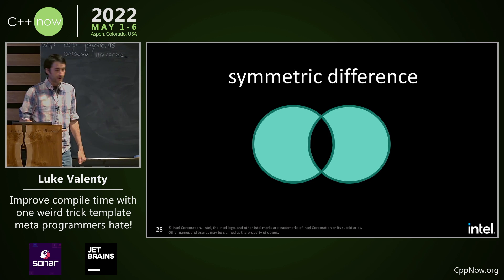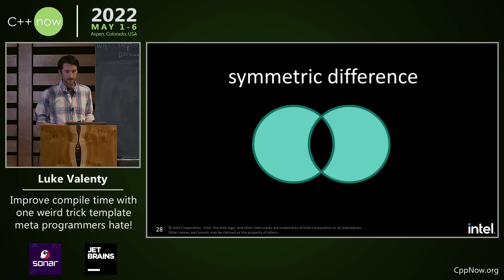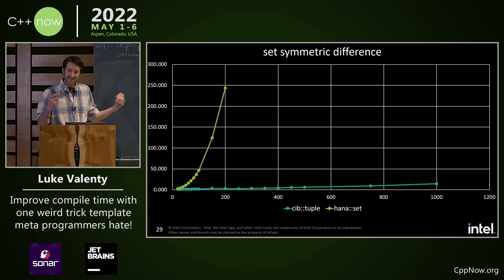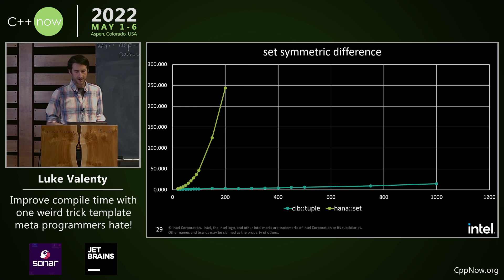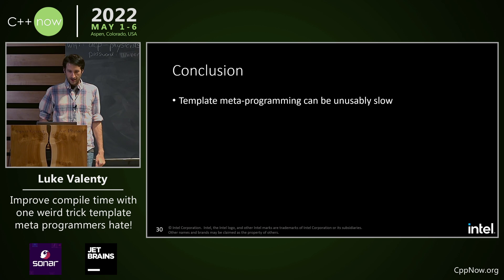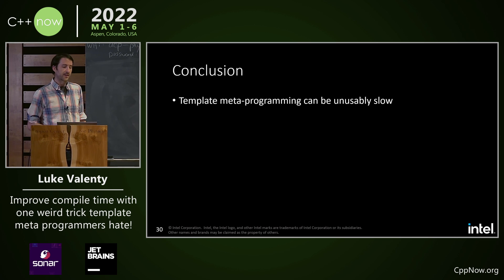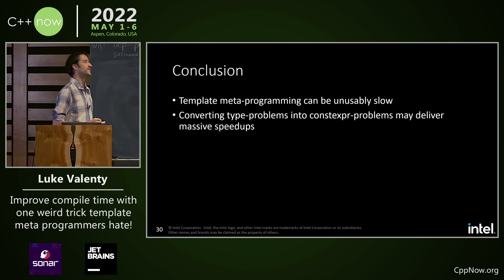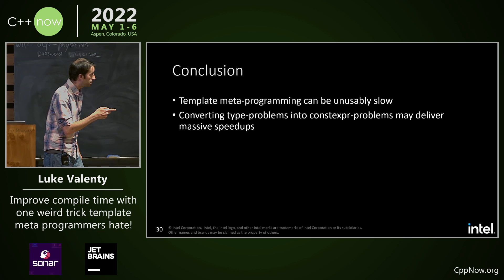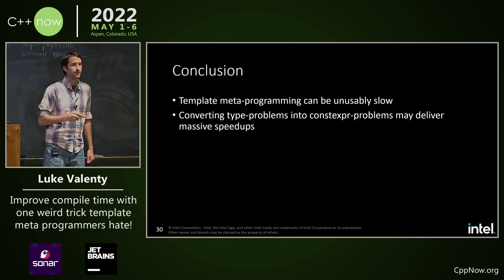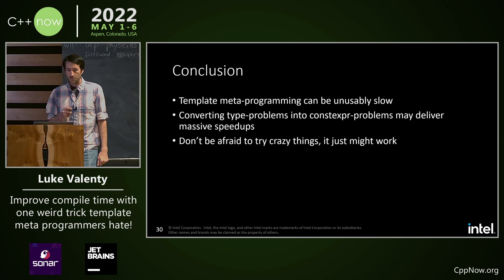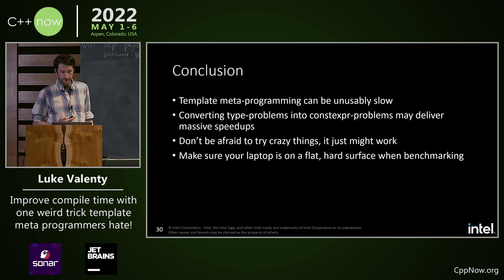Symmetric difference: we find the elements that are unique in both sets — the elements they don't share. Same story: polynomial runtime on HANA set and linear on the CIB tuple. The conclusion is that template metaprogramming can be unusably slow. Converting type problems into constexpr problems may deliver massive speedups. Don't be afraid to try crazy things — it might just work. And make sure your laptop is on a flat, hard surface when benchmarking.